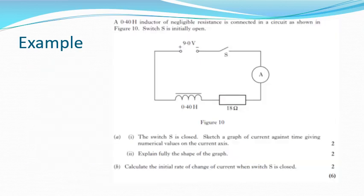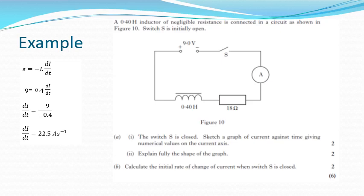Part b asks us to calculate the initial rate of change of current when the switch is closed. Using EMF = −L(dI/dt), the back EMF is −9 volts and the inductance is 0.4 henrys. Substituting in gives a rate of change of current of 22.5 amperes per second.